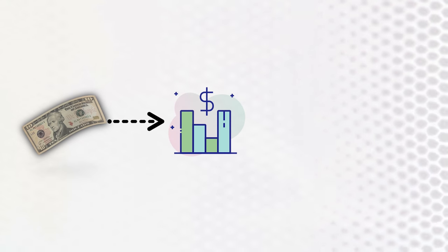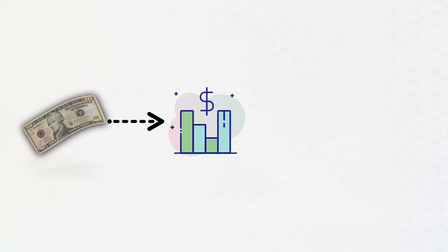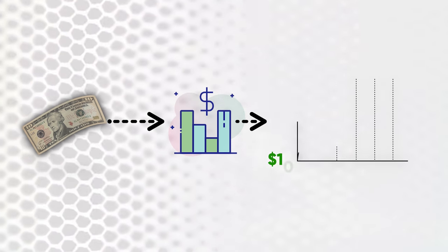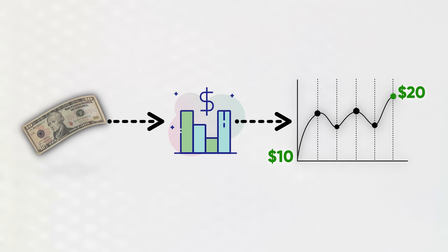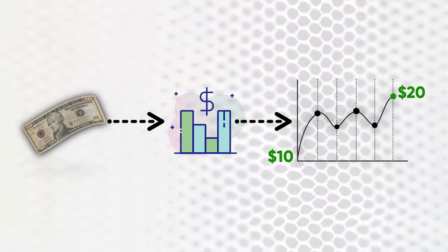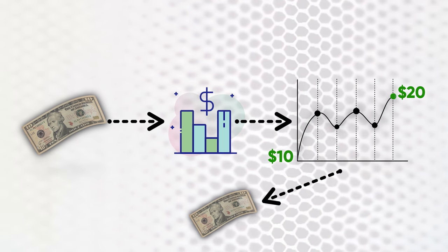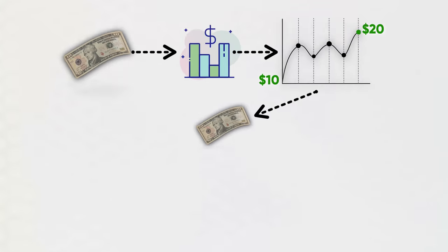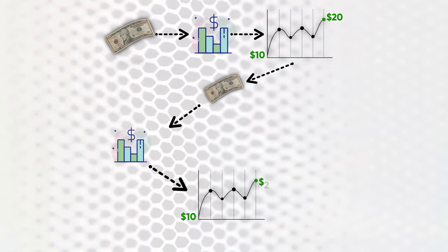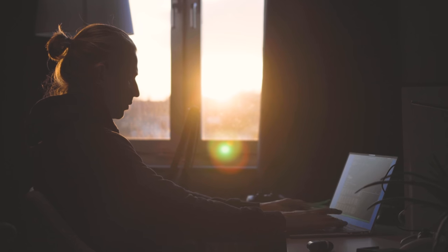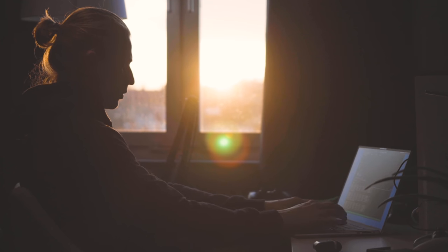If you take $10 and invest it into a stock you've researched that you believe has potential to increase in value over the next week, month, or year, and that stock actually doubles in value, you now have $20. If you take out your original $10 and leave the other $10, you've basically invented new money out of thin air. If you extrapolate processes like this over five, ten years, or even a lifetime, you have a very good chance of becoming financially independent — I'd go as far as saying it's almost a guarantee.